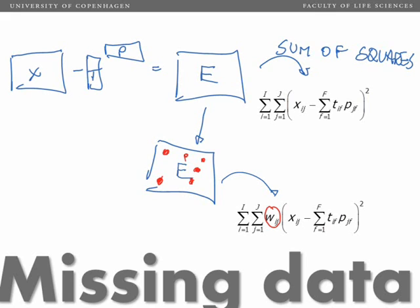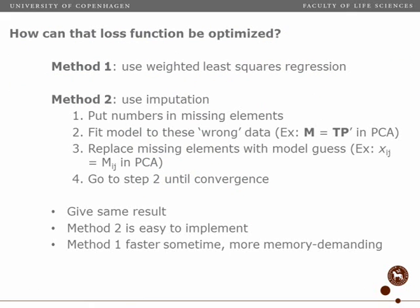How can we actually estimate this? There are basically two approaches. One is that we can use weighted least squares regression. Instead of alternating least squares, we can do alternating weighted least squares regression. Or we can use imputation, and I'm going to explain that in detail.